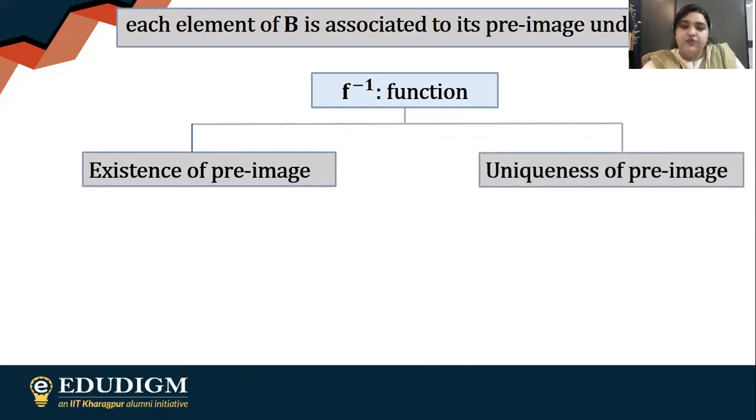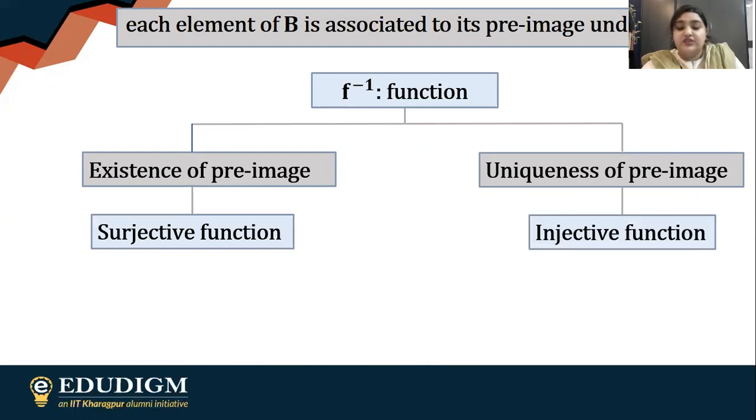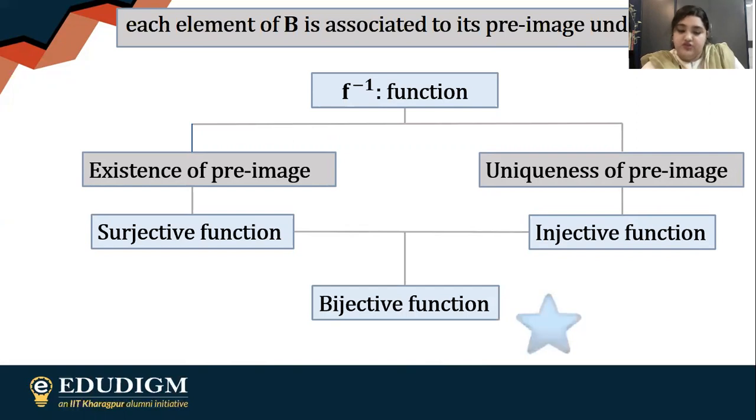This existence will give you surjectivity. Uniqueness is going to give you injectivity. Together it has to be a bijective function. It's very important that you understand this. Unless it's a bijective function we don't talk about the inverse.